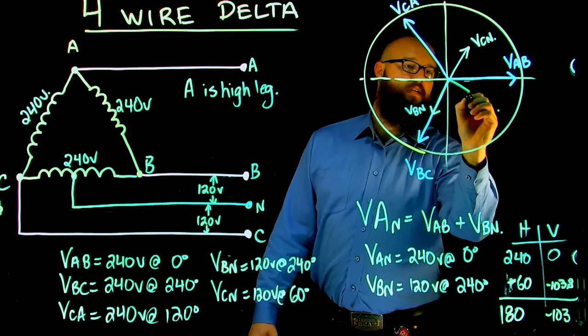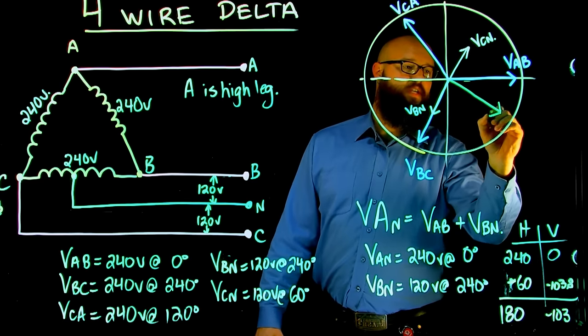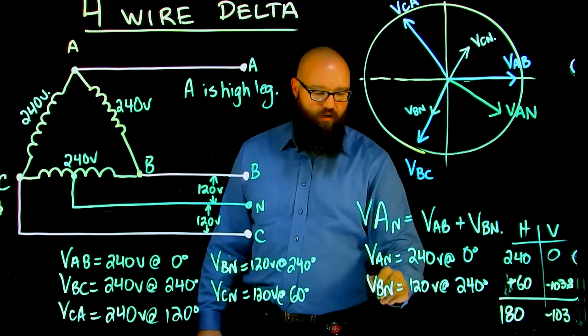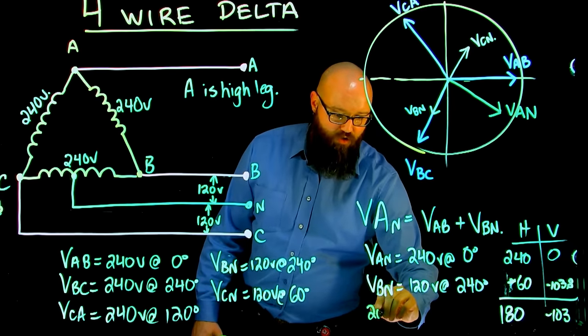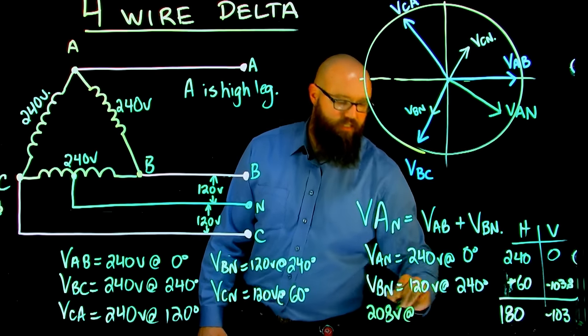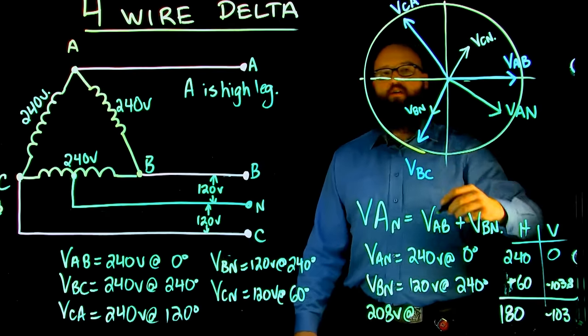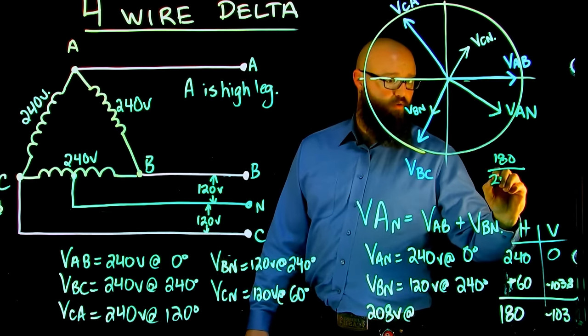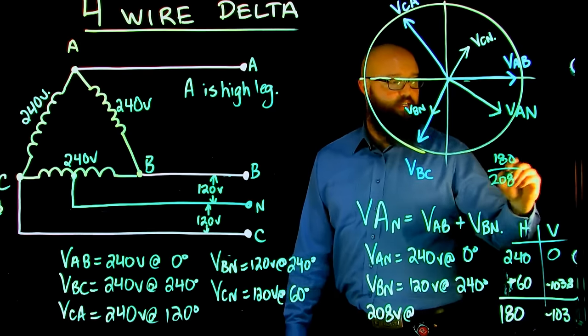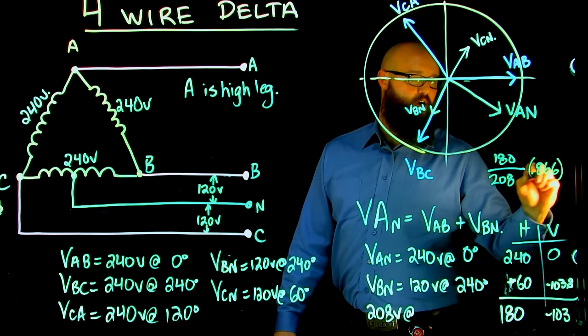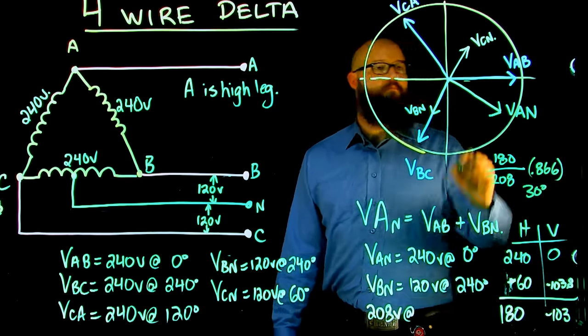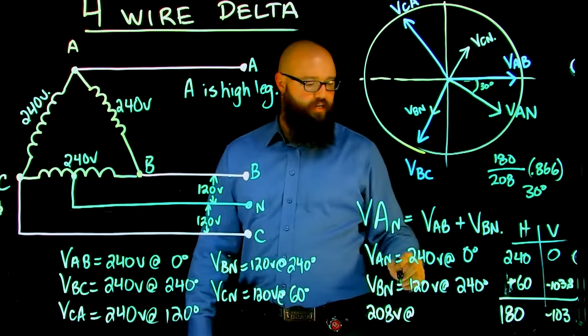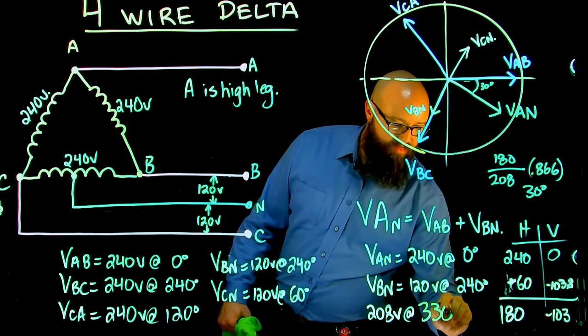So what we should see is our resultant voltage or our V A to N right here, which if we do Pythagorean's theorem, we end up with 208 volts at, if we calculate out the angle, if we say 180 divided by 208 gives us 0.866, which when I arc cos is 30 degrees, means that we are 30 degrees behind V A to B, which puts us at 330 degrees.